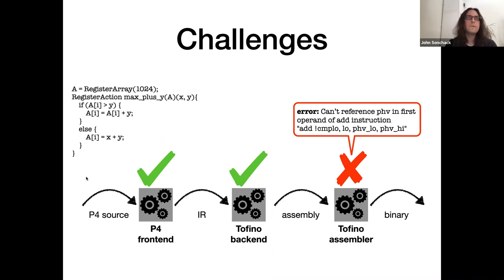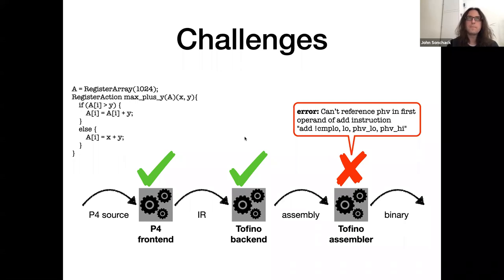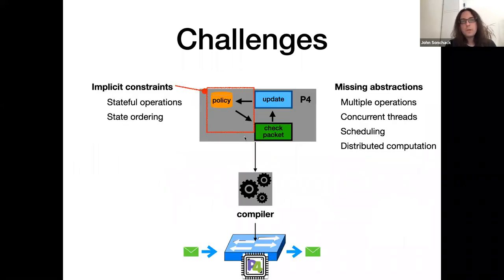Here's another example — a single atomic stateful function that's too complicated to compile to the stateful ALU in the Tofino. This function is valid according to the P4 frontend and the Tofino backend, but an error occurs all the way in the assembly stage of compilation. This error message is better but still leaves the programmer to work all the way back from assembly and figure out what a legal assembly instruction looks like. In our experience, those are the two classes of problems that make it hard to develop data plane applications with integrated control in P4: missing abstractions and implicit constraints.